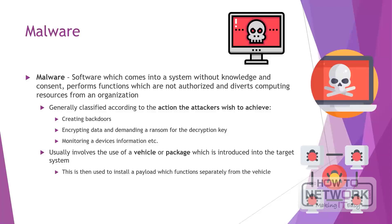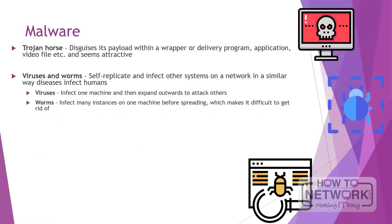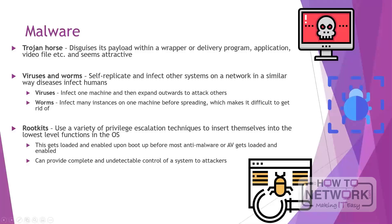A Trojan horse malware is named according to the way it disguises its payload within a wrapper or delivery program — application, video file, etc. — and seems attractive. Viruses and worms get their names due to the way they self-replicate and infect other systems on a network, in a similar way that diseases infect humans. The difference is that viruses infect one machine and then expand outwards to attack others, while worms infect many instances on one machine before expanding outwards, which makes them difficult to get rid of. Rootkits are a special class of malware which use a variety of privilege escalation techniques to insert themselves into the lowest level functions in the operating system. This gets loaded and enabled upon boot up, before most anti-malware or antivirus gets loaded, providing complete and undetectable control of a system to attackers. They are rarely seen and are a favorite of advanced persistent threats.